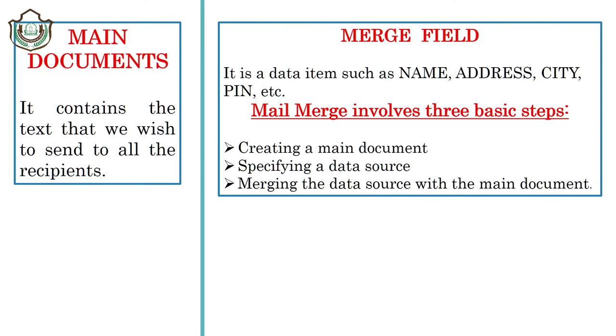The main document contains text that we wish to send to all the recipients. A merge field is a data item such as name, address, city, pin, etc.